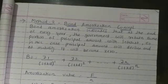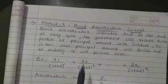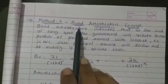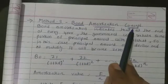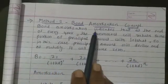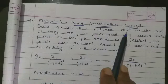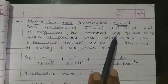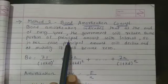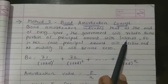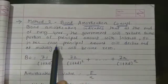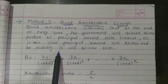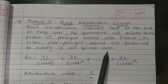Today in this session we will discuss a second method, that is the bond amortization concept. Bond amortization concept indicates that at the end of every year the government will return some portion of the principal amount with interest. So in this case the principal amount will decline and at the end of maturity it will become zero.